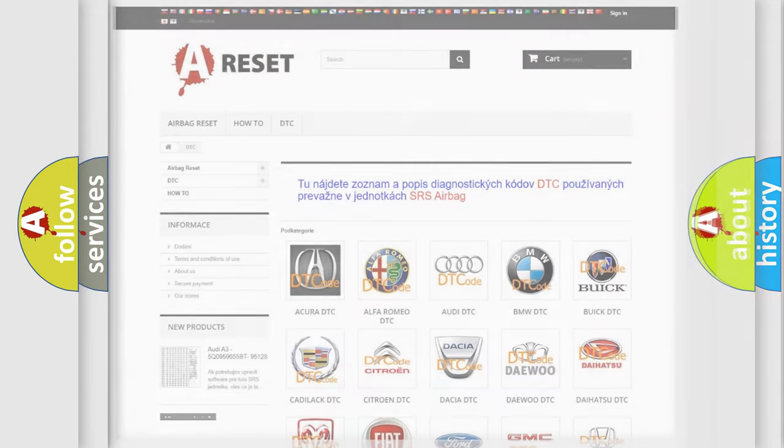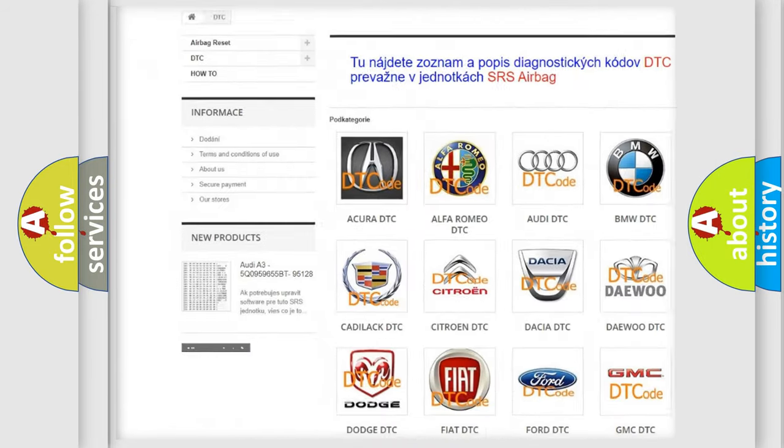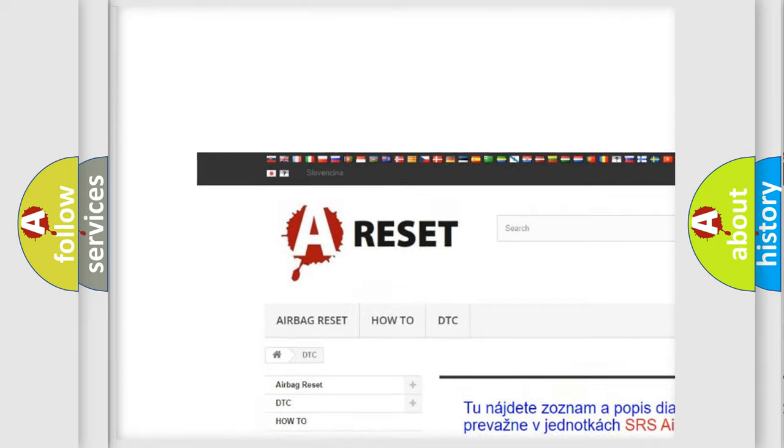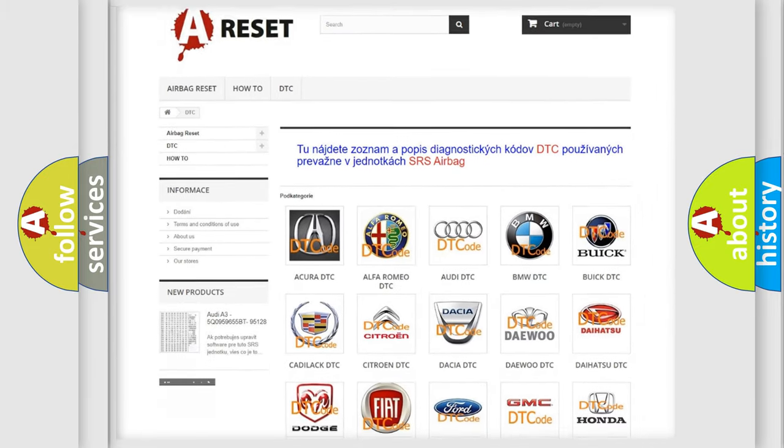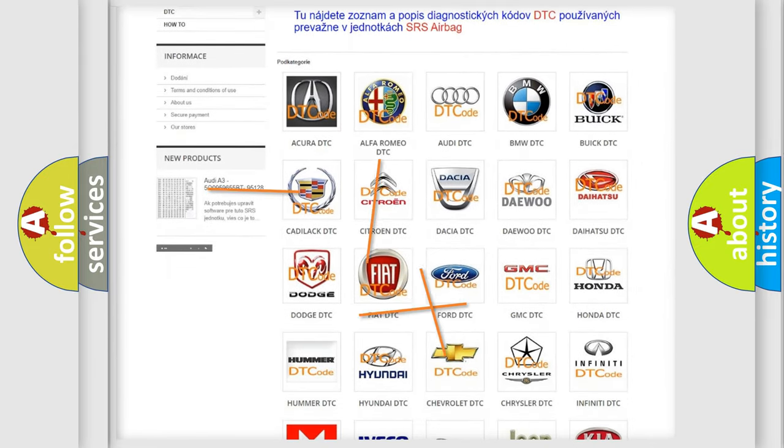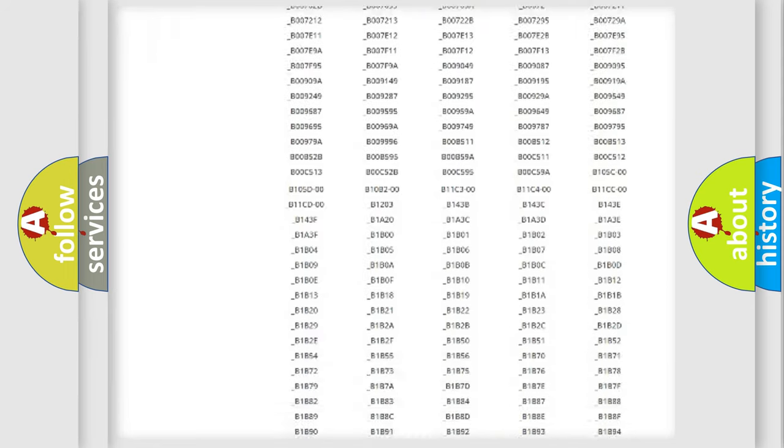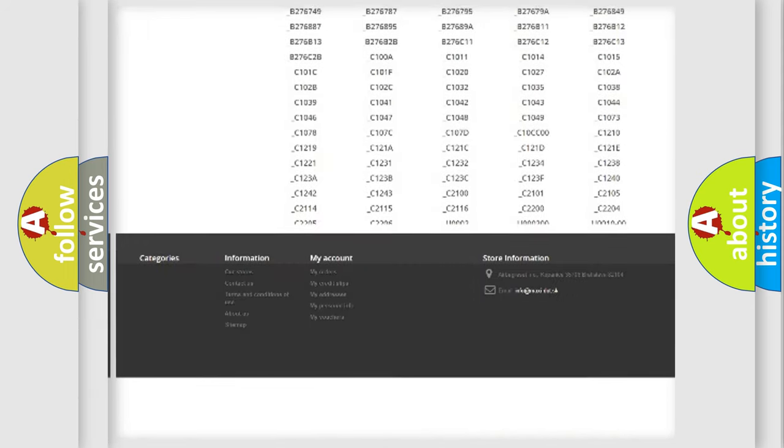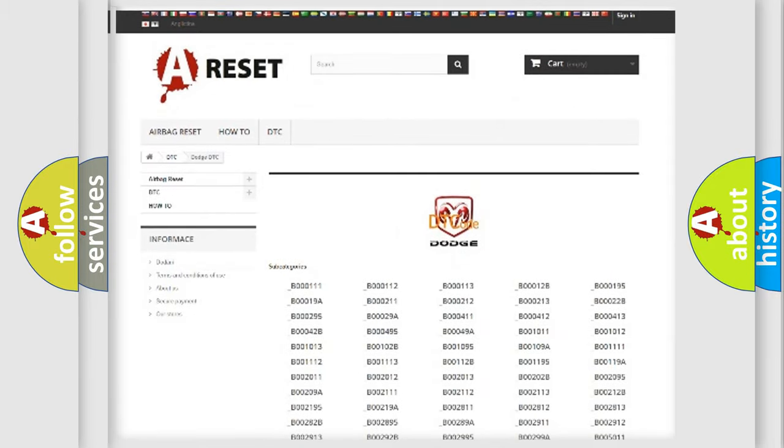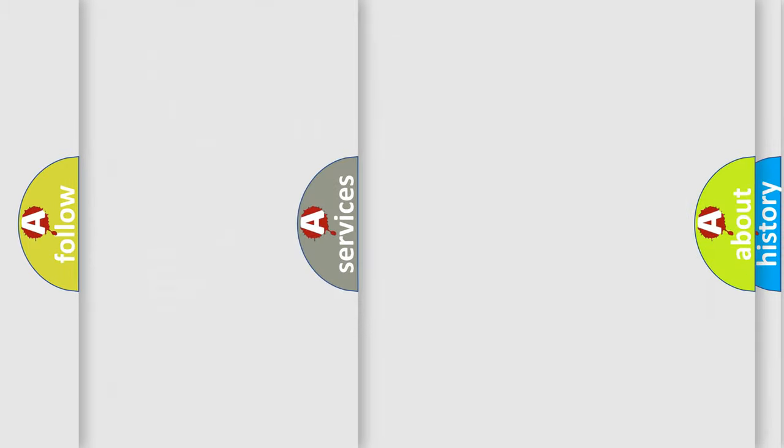Our website airbagreset.sk produces useful videos for you. You do not have to go through the OBD2 protocol anymore to know how to troubleshoot any car breakdown. You will find all the diagnostic codes that can be diagnosed in Dodge vehicles, and also many other useful things.